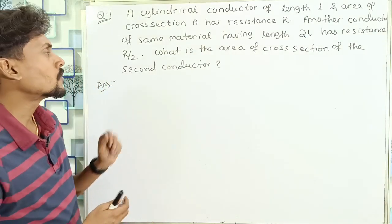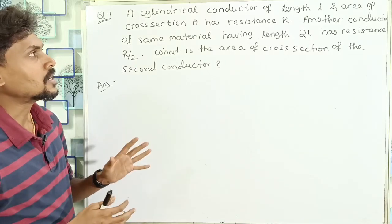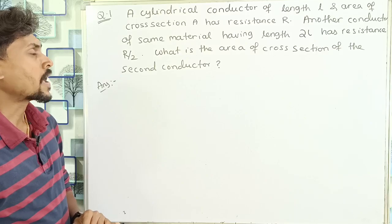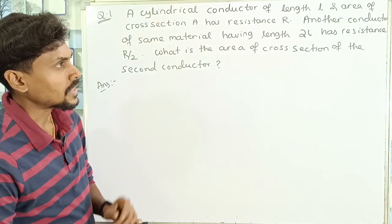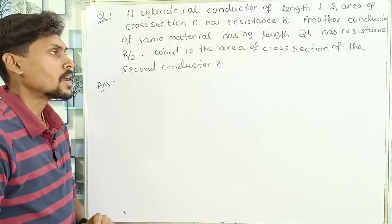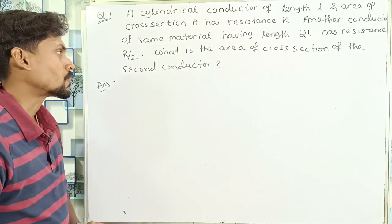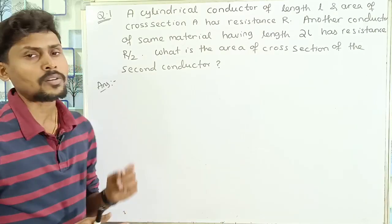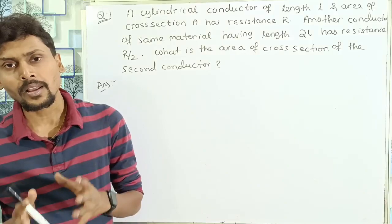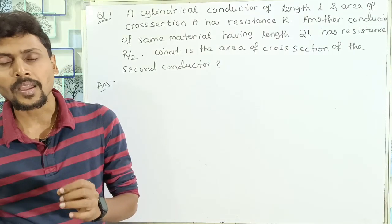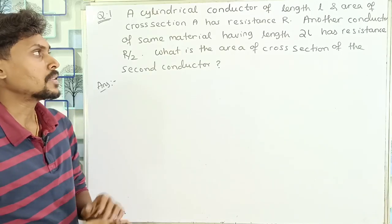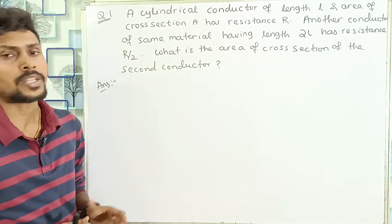The first question: A cylindrical conductor of length L and area A has resistance R. Another conductor of the same material having length 2L has resistance R by 2. What is the area of cross section of the second conductor? We have a cylindrical conductor whose length is L, area of cross section is A, and resistance is R.